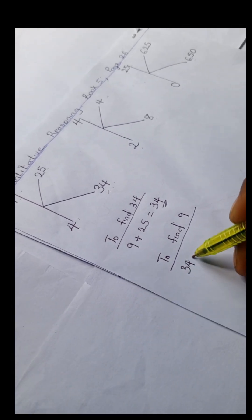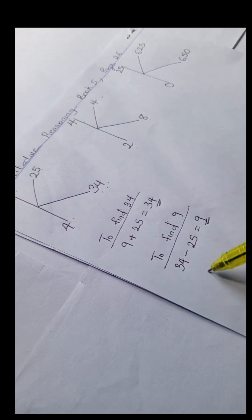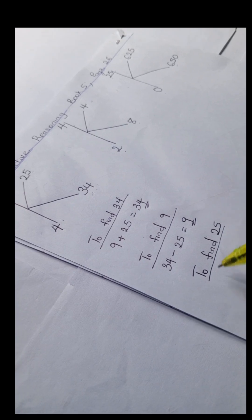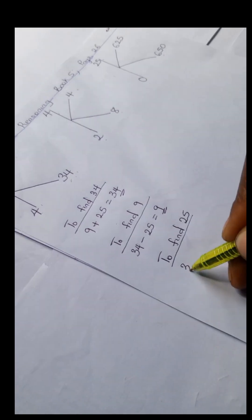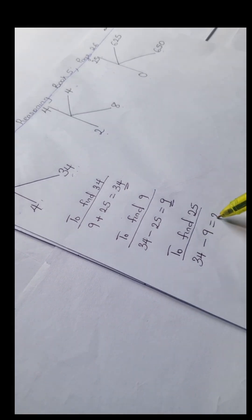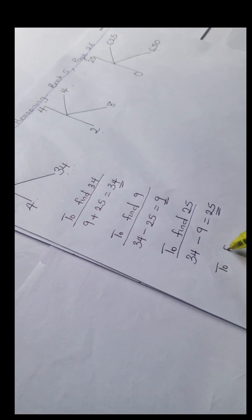34 minus 25 gives us 9. And to find the 25, we have 34 minus 9 equals 25. And to find 4...